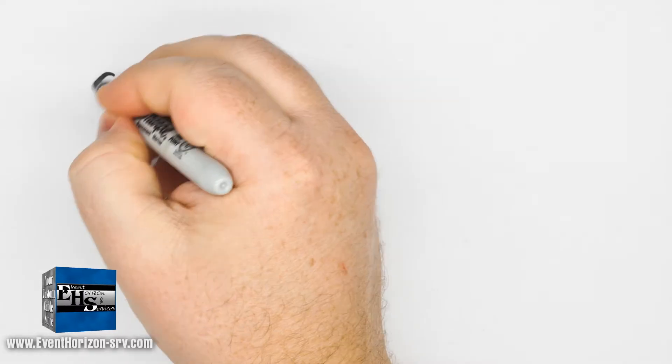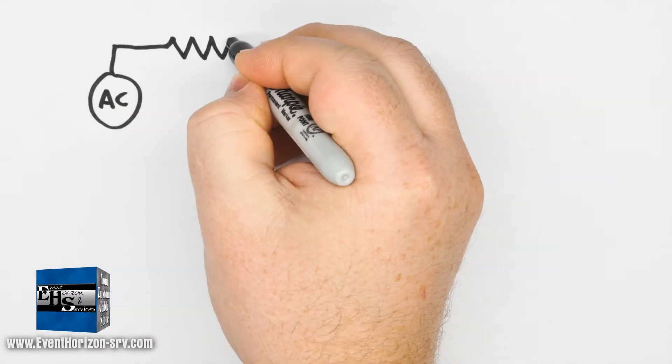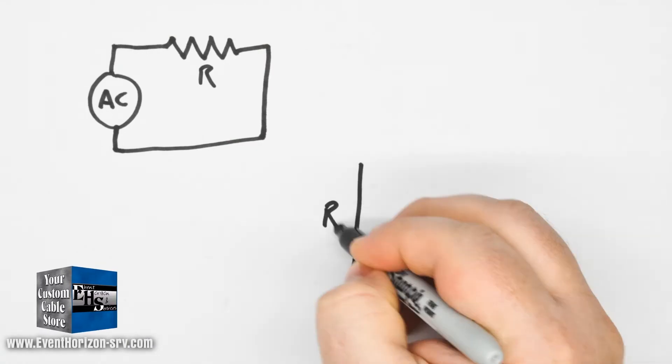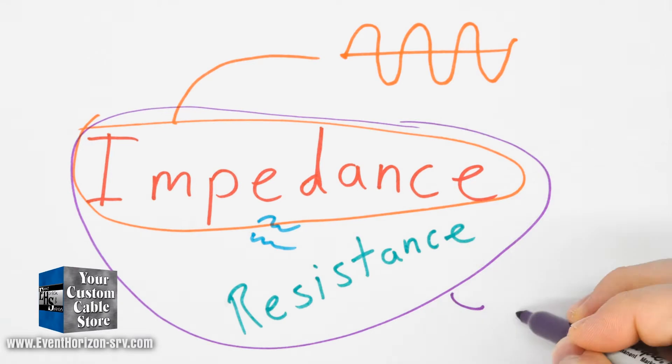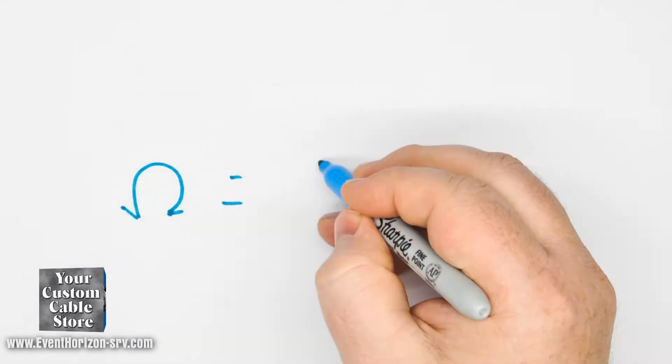So impedance is the difficulty of electrons to flow through a conductor with an AC or alternating current. Impedance can vary with the frequency of the signal. Resistance is measured with DC or a zero frequency, while impedance is measured at a frequency and can vary with the frequency of the signal. The ohm is the unit of measure for resistance and impedance.